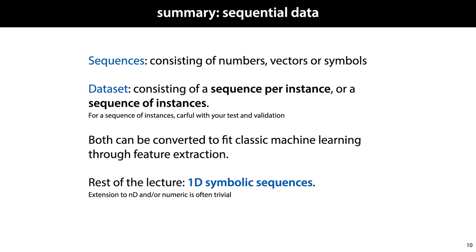So this is our view so far of sequential data. Sequences in general consist of numbers, vectors, or symbols. A dataset consists either of a single sequence per instance, as in the email example, or as a single sequence containing instances, as in the sunspot example. Both of these can be converted to fit classic machine learning settings through feature extraction, but we can gain a lot by developing models that consume sequences directly without the need for feature extraction.